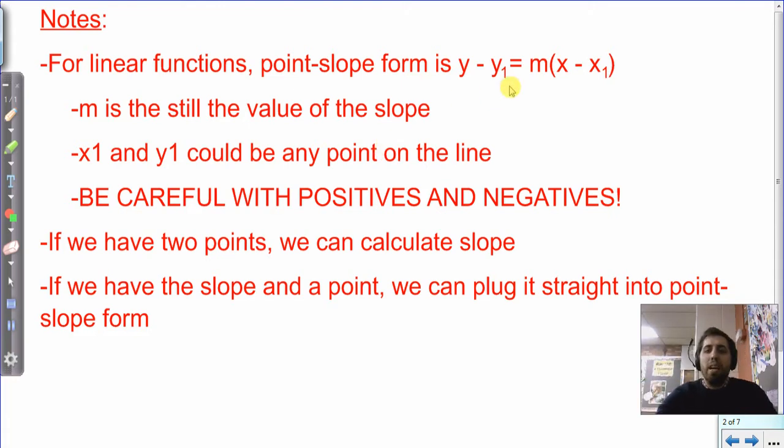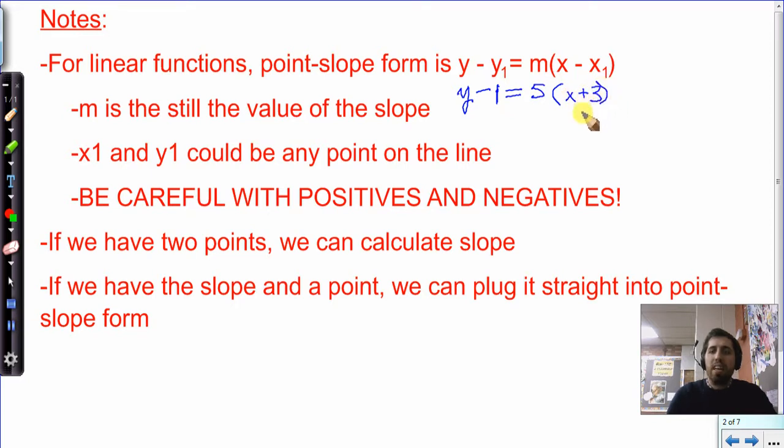And so we can just plug those right in. But what you'll see is that if you see a specific equation written out in point-slope form, like y minus 1 equals 5 times x plus 3, people are going to say, what's the point? Well, the x's go together, so that'd be positive 3, and the y's go together, so that'd be negative 1.